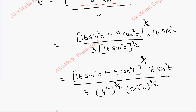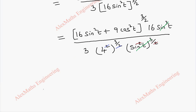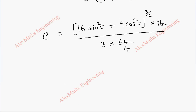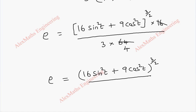We cancel the sin cube t terms and the powers of 2, leaving 4³ = 64 in the denominator. Combined with the factor of 3, we get 3 × 64 / 16 = 12. So ρ = (16sin²t + 9cos²t)^(3/2) / 12. This is the answer for the first part.